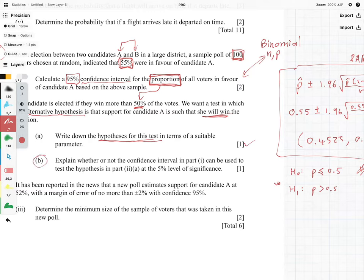This question here I think a few of you might have struggled with. It says explain whether or not the confidence interval in part one can be used to test the hypothesis in part two at the five percent level of significance. That is the big clue.